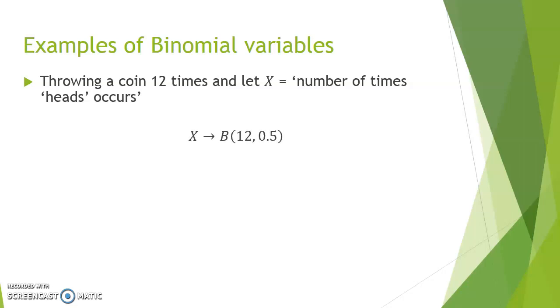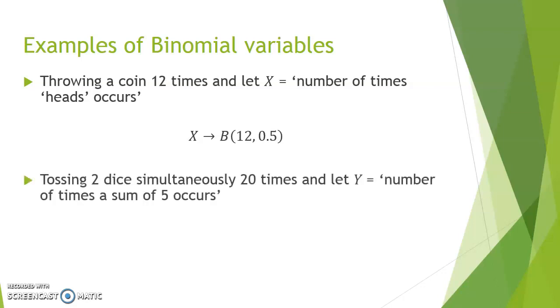If you were on 20 different occasions to toss two dice simultaneously and if you were to consider the number of times a sum of five was observed, then this would also be a binomial law. The sum of the two dice is independent from the result you would have gotten in a previous toss. So Y in this case would be a binomial law consisting of 20 trials, and I'll let you verify that obtaining a sum of five does indeed have a probability of 1 over 9.